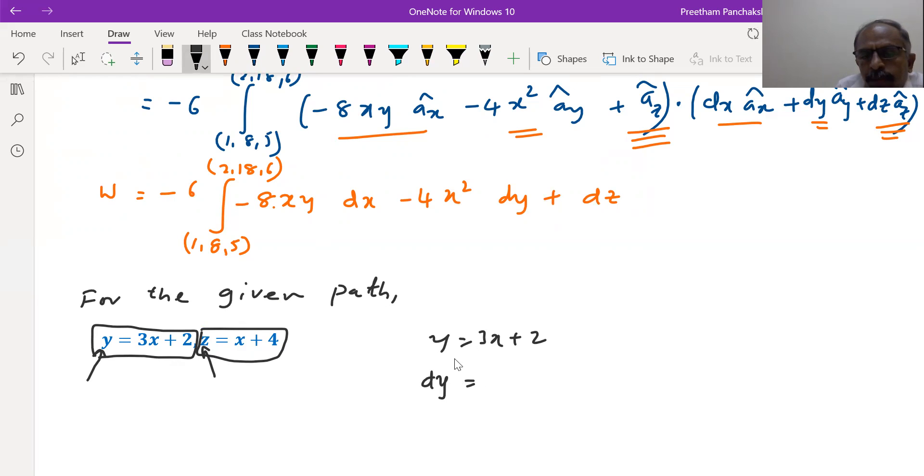Differentiate this equation. Y equal to 3x plus 2, differentiation of y is dy equals 3, differentiation of x is dx. Differentiation of 2 is 0. So now y and dy can be removed. Finally, same thing happens to z also.